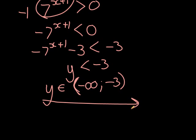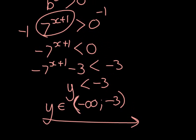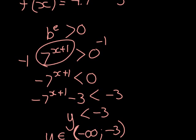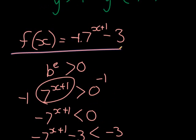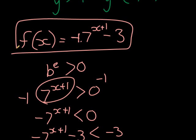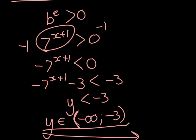That's what we covered about range. Remember, the range is the possible values that I can get out with a certain function. For this function, y can take any value between negative infinity and negative 3 — which also means I will never be able to get the value 0, for example, no matter what I put in for x. That concludes Domain and Range. You can do some examples right now. Good luck.